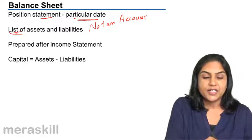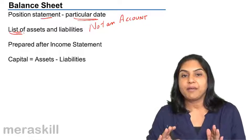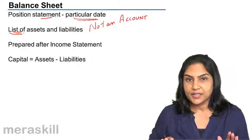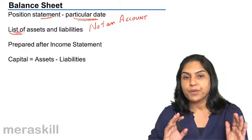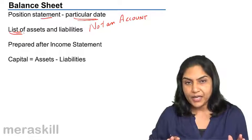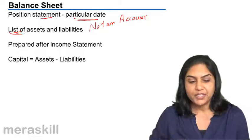It is just a list, a schedule, a statement consisting of assets on one side, liabilities and capital on the other. Assets, following double entry, assets minus liabilities would be equal to capital, the net worth of the business, what belongs to the proprietor of the business.